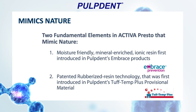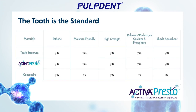The two fundamental elements of Activa Presto that mimic nature: first, the moisture-friendly mineral-enriched ionic resin, first introduced in Pulp Dent Brace products; and second, the patented rubberized resin technology first introduced in Pulp Dent's Tough Temp Plus Provisional Crown and Bridge material. The tooth is the standard structure. Looking at the categories of aesthetics, moisture friendliness, high strength, calcium release and recharge, and shock absorbency — natural tooth structure is positive in all of those categories, as is Activa Presto. Traditional composite resins are aesthetic and have high strength, but they are not moisture friendly, do not release or recharge calcium and phosphate, and they don't have shock absorbency — they're very brittle.